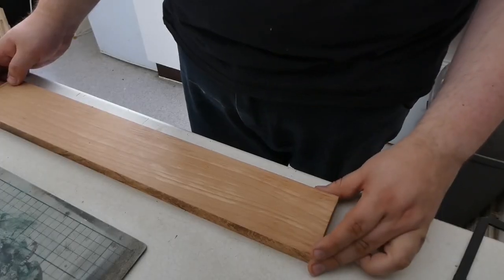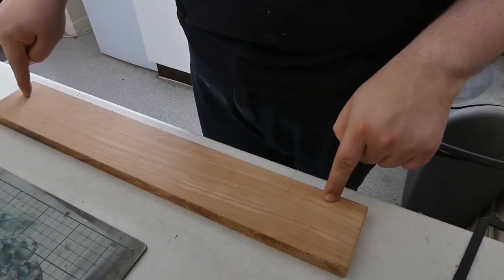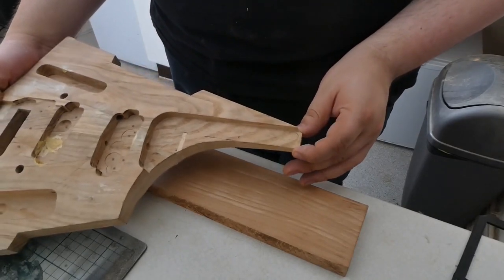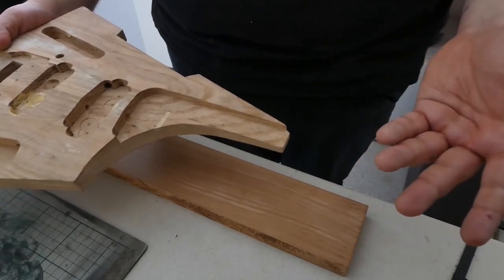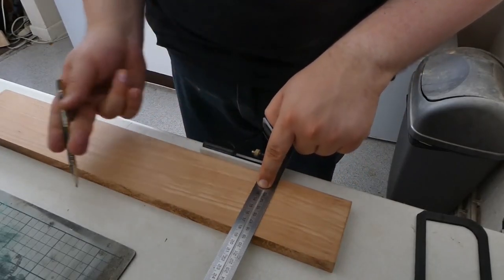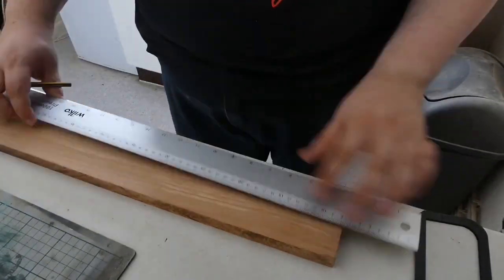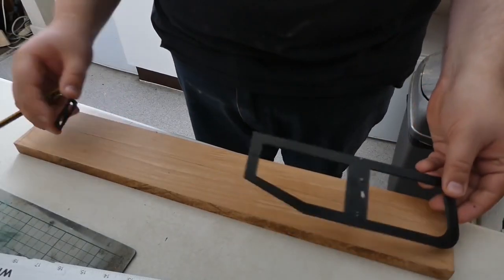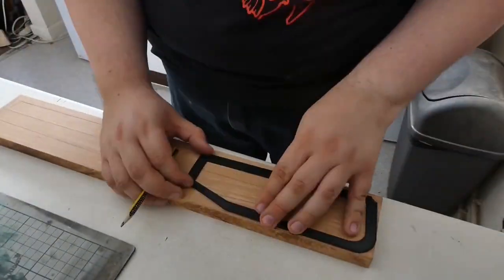I need an off-centre centreline. If I was making a normal neck, my centreline would be straight down the middle. However, this body has an asymmetric neck pocket, so my centreline, if it was on centre, would be in the wrong place. I'm arbitrarily just going to declare that my centreline is three and a half centimetres away from the right edge.